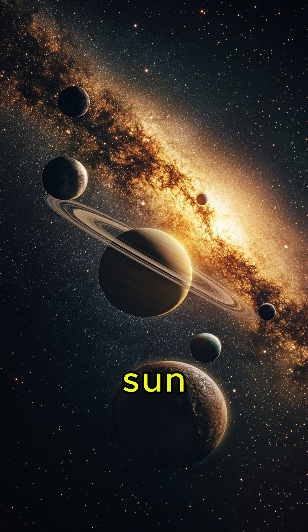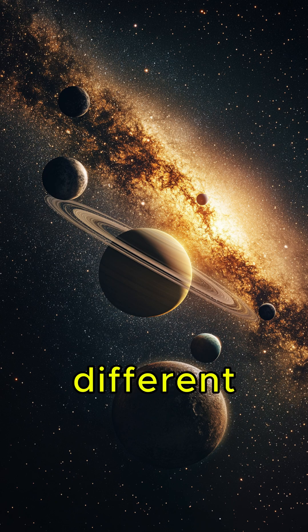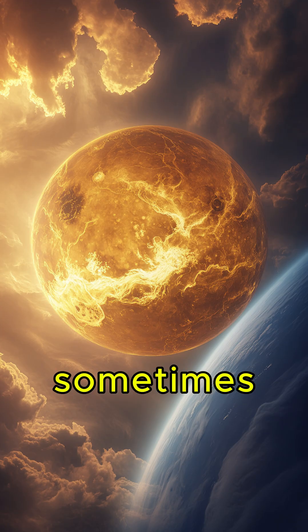Planets revolve around the Sun in elliptical orbits at different speeds. Sometimes they come close to each other, and sometimes they move away.